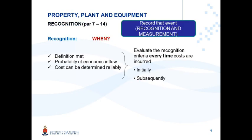The first step in the accounting process is to identify an economic event. The second step is to record that event. Recording that event involves recognition and measurement decisions. The first decision is to decide when an item may be recognized. Every time costs are incurred, initially and subsequently, those costs need to be evaluated against the recognition criteria before the decision can be made.